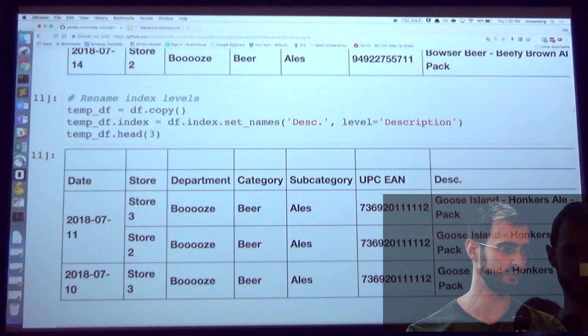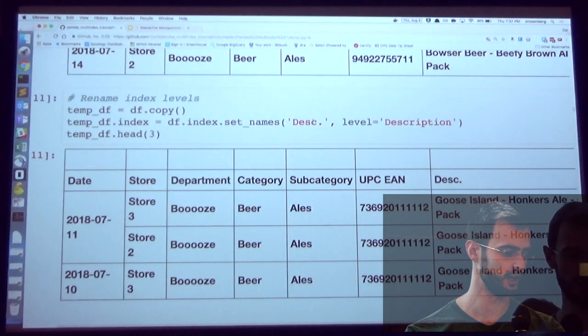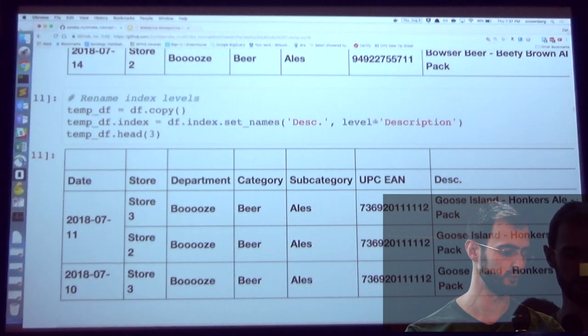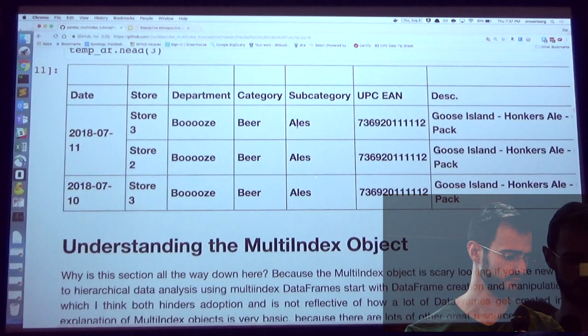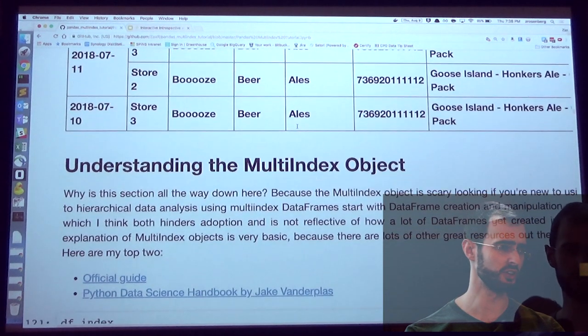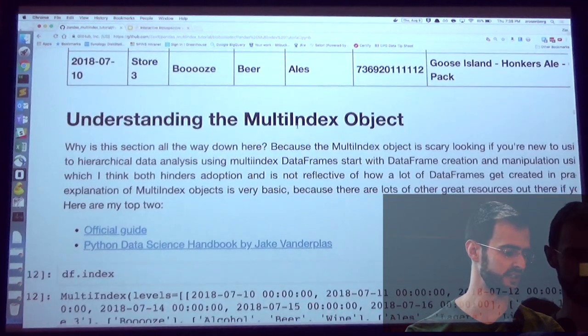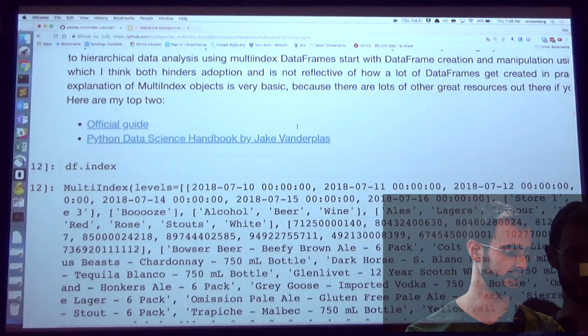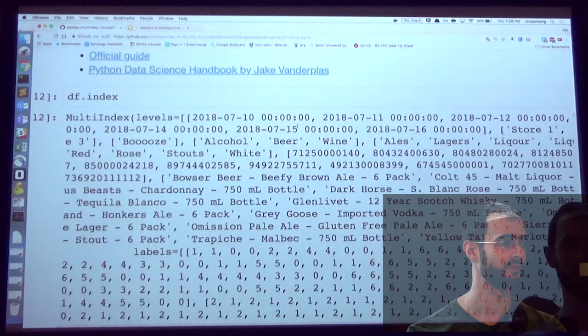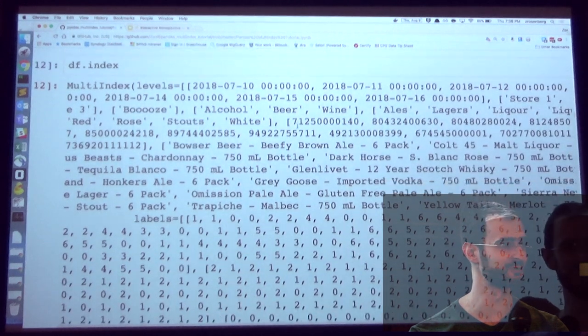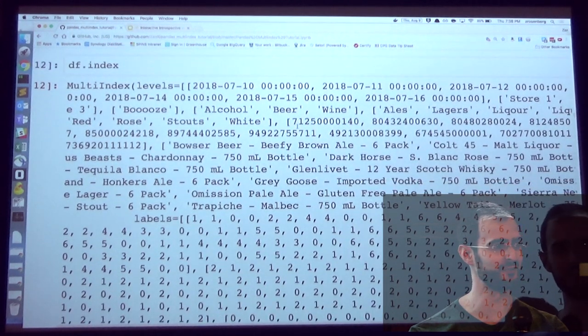The more common syntax you're going to see for methods for multi-index is what we're going to see right here. So if I want to change the names of my index levels, I use set_names. And this is the type of format we're going to see for a lot of methods, where the first parameter is the value you want to change to, comma, and then the level, you'll specify what level you're trying to change something for. So here I'm changing the description level to DESC. So that was a really long intro to something that seems super simple, right? And the reason why I did that is because there are other multi-index guides out there, and they all start with this.